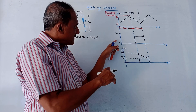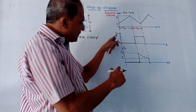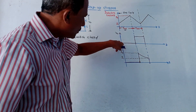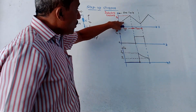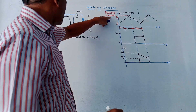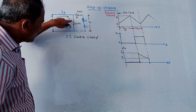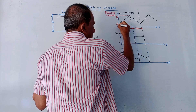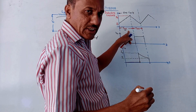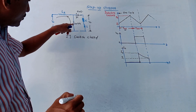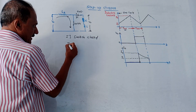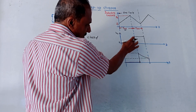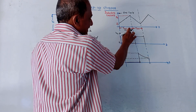Looking at the output waveform V0: from 0 to T_on — T_on being the time period for which the switch is closed — you are getting zero output. Now looking at the inductor current waveform: whenever the switch is closed, the inductor starts storing energy, so the graph increases from some value i1 to i2 during this T_on time period. The output current i0 is also zero during this on-time period.